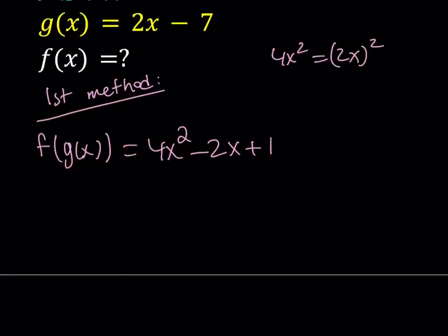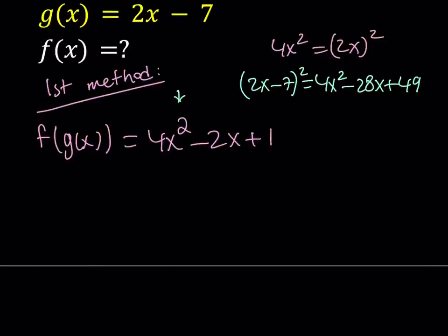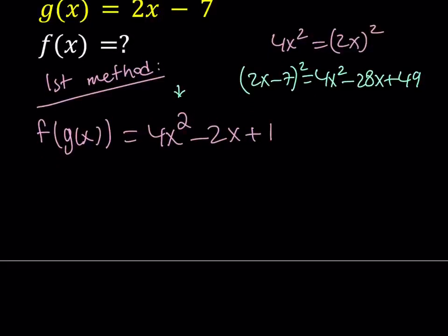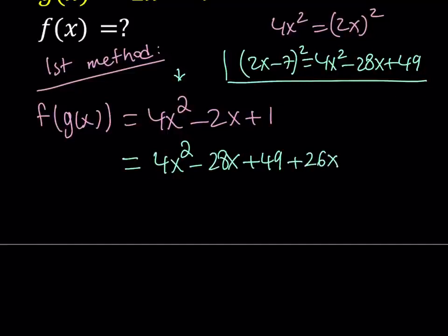2x minus 7 squared is 4x squared minus 28x plus 49. Now notice that the expression I'd like to manipulate has 4x squared but doesn't have negative 28x. But don't worry, we're going to fix that. So I'm going to take 4x squared minus 2x plus 1 and write it as 4x squared minus 28x plus 49, adjusting by adding 26x to make it negative 2x, because negative 28x plus 26x equals negative 2x.